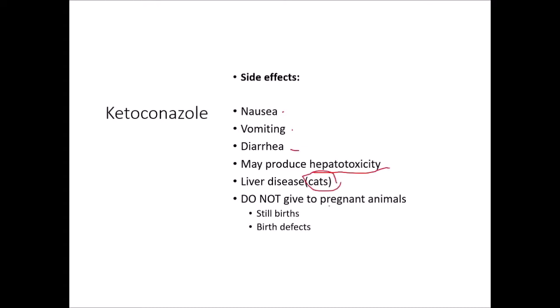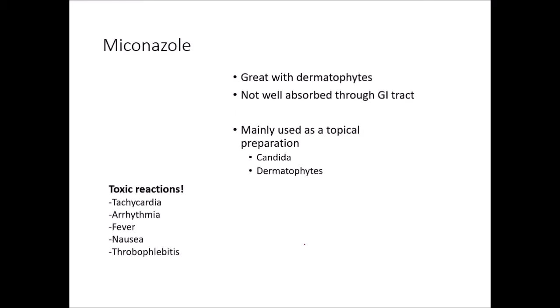Miconazole is great with dermatophytes, such as ringworm. It's not well-absorbed in the GI tract, so we use it as a topical preparation. On mucous membranes we can give it orally, but it won't get into the rest of the body. We use it for candida and dermatophytes. Toxic reactions are dose-dependent and include tachycardia, arrhythmias, fever, nausea, and thrombophlebitis.